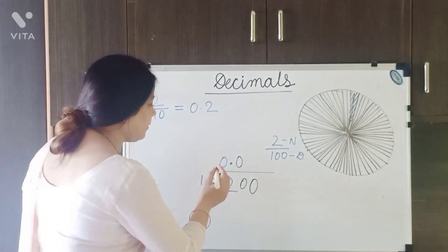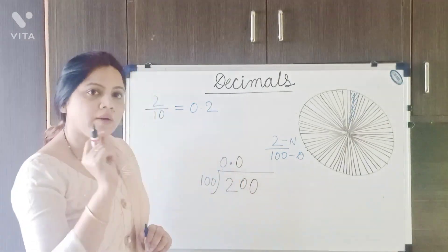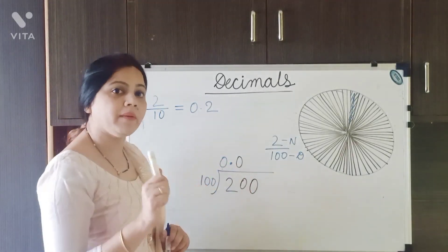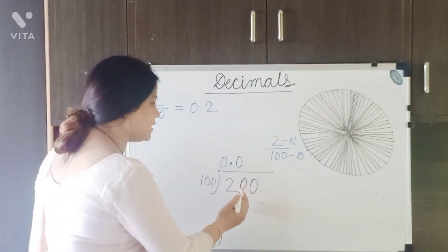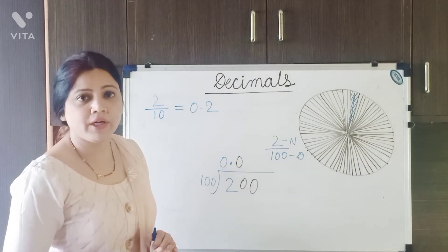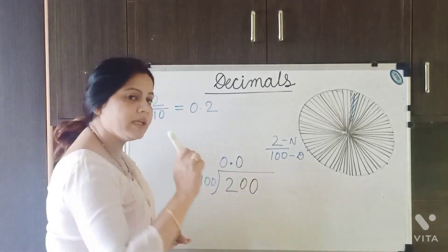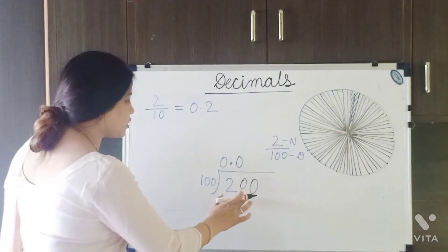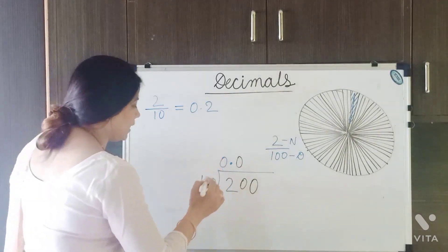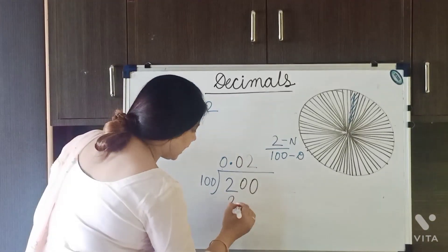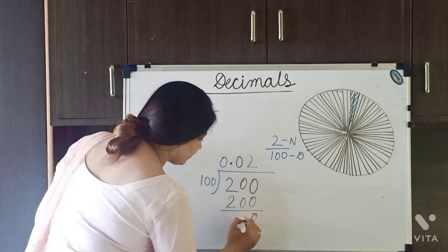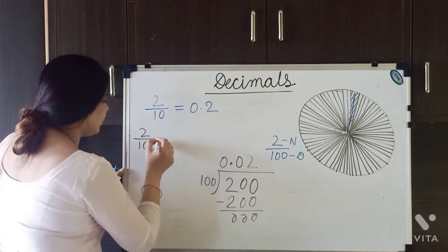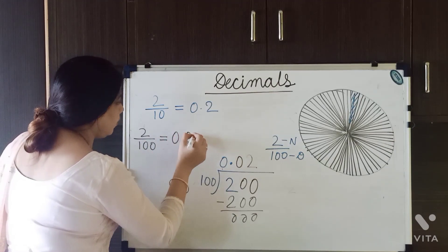For the first time, we have to give 0 and a decimal point. After that, if division is still not possible, we only give 0 — no need to write the point again. So we add 0 here and now we have 200, which is divisible by 100. 100 times 2 equals 200. So 2 upon 100 can be written as 0.02.